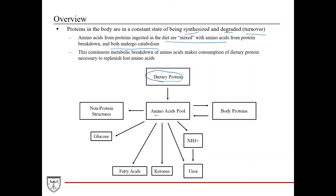Amino acids from dietary proteins are mixed with amino acids from protein breakdown to form an amino acid pool. These amino acids can also be used for neurotransmitters or other non-protein structures. What's left over is broken down into ammonia and urea, the final end products. During periods of fasting, amino acids can be used to synthesize ketones, fatty acids, or glucose via gluconeogenesis. The continuous metabolic breakdown of amino acids makes consuming dietary protein necessary to replenish lost amino acids, since excess amino acids are not stored.